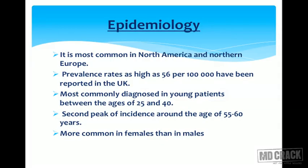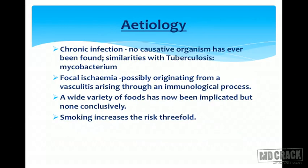Epidemiology: It is most common in North America and Northern Europe. Prevalence rates as high as 56 per 1 lakh have been reported in the UK. It is most commonly diagnosed in young patients between ages 25 and 40, with a second peak of incidence around the age of 55 to 60 years. It is more common in females than in males.